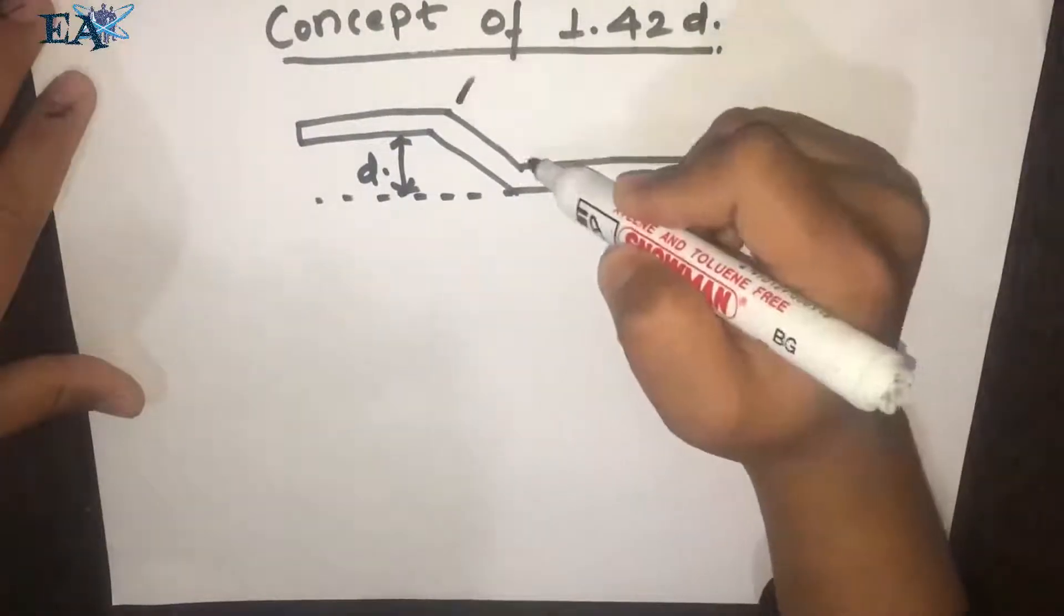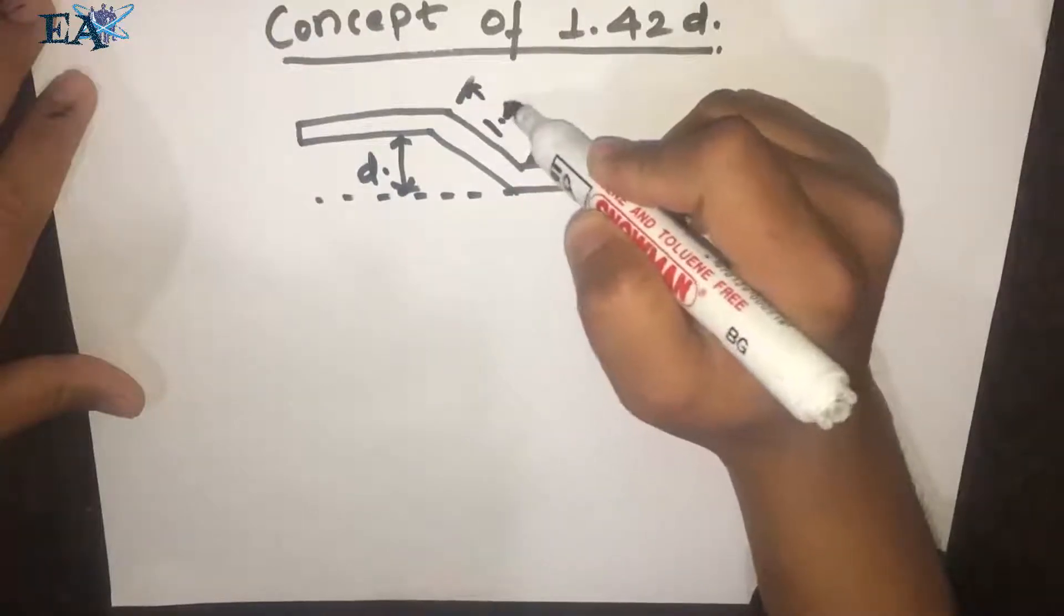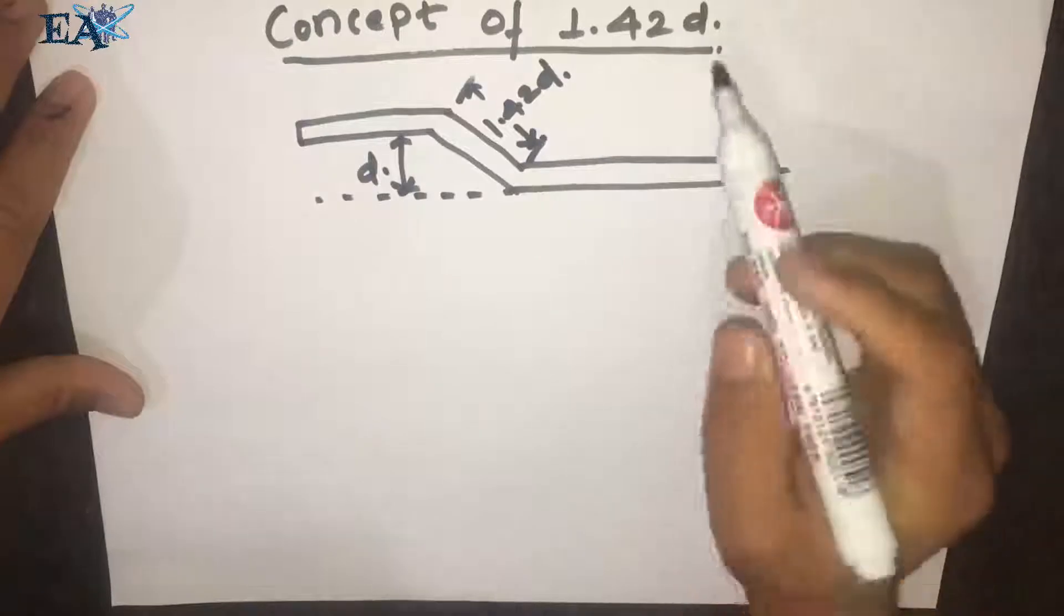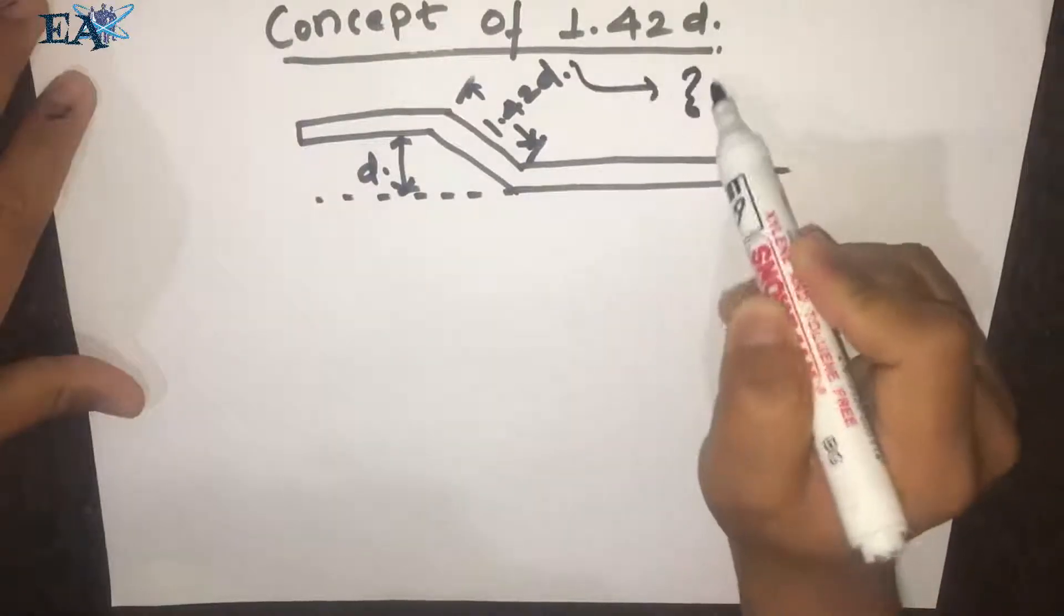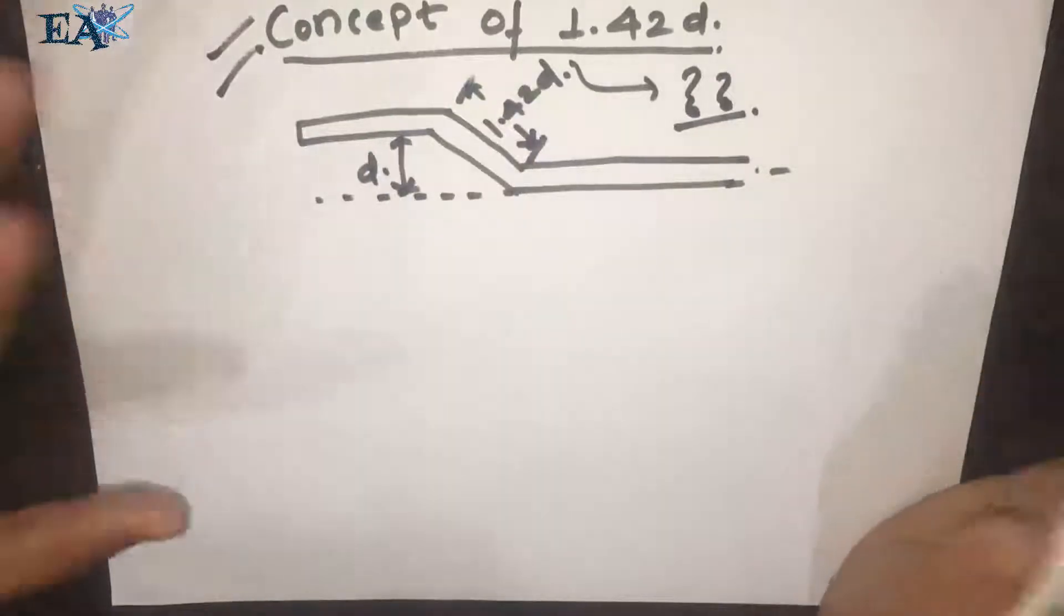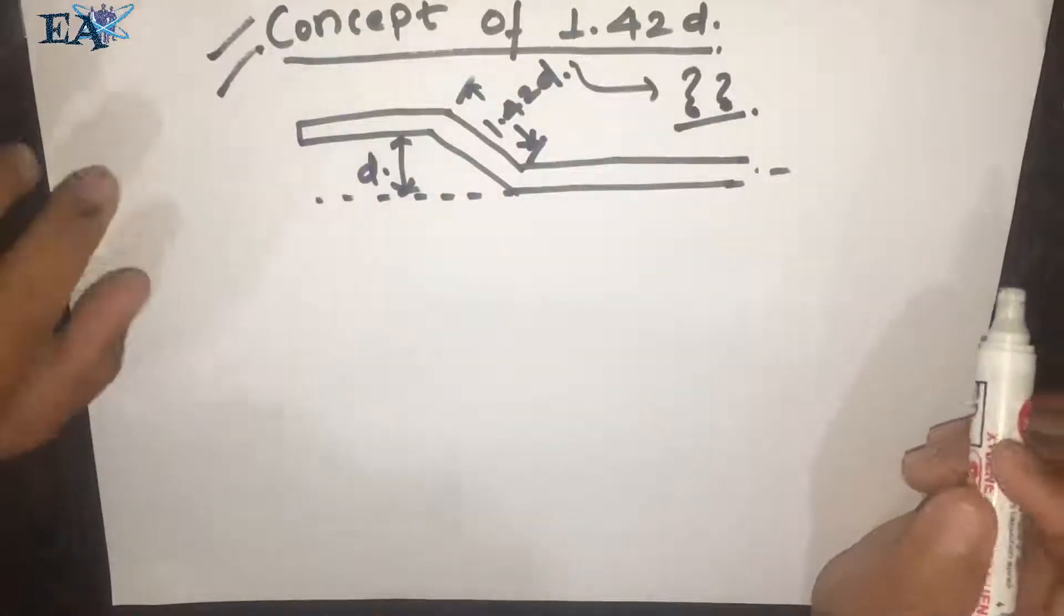In one of my videos I have shown that this length over here is 1.42D. So in this video we'll talk about why this is 1.42D. This is the topic: concept of 1.42D.